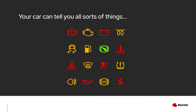Anyone who owns a car has likely seen one or more of these lights on your dashboard. These symbols are giving you information about the status of your vehicle. Some of these may be expected or known issues you're planning to address soon, like the low fuel light telling you that you need gas. Others, like the check engine light, tell you something is going on, but it lacks additional details.